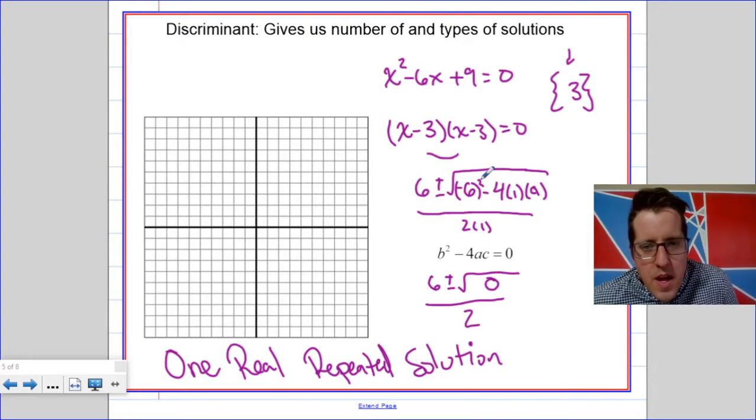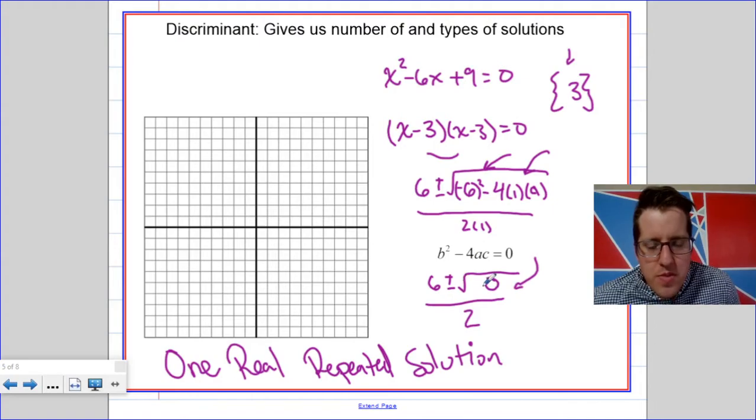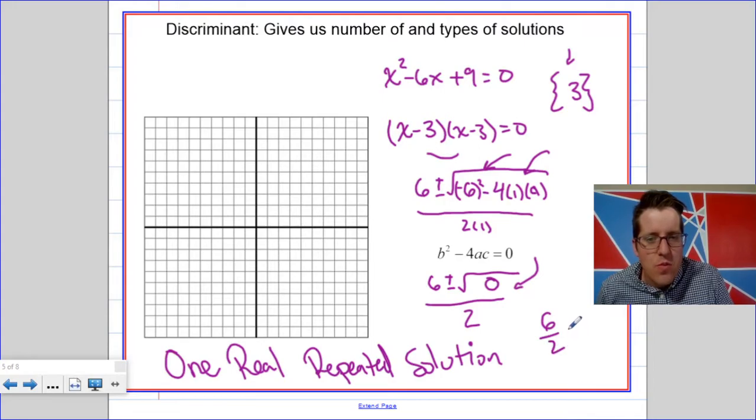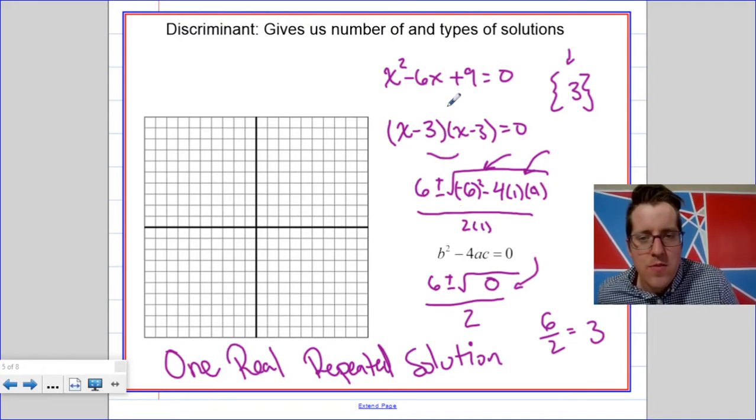So, when I plug it in, I'm going to get 36 minus 36. That's where the 0 comes from. Now, think about adding or subtracting the square root of 0. It's nothing! So, adding 0 and subtracting 0 doesn't do anything, so our answer is just 6 halves, which is, by the way, 3.